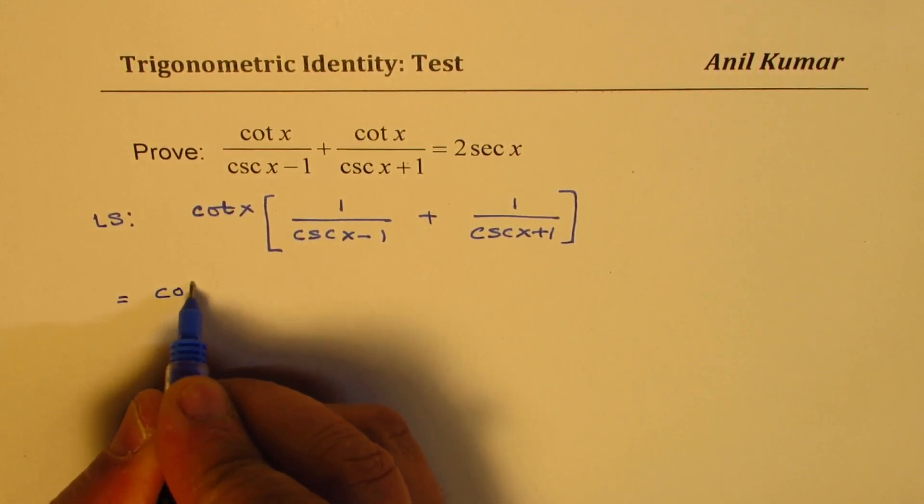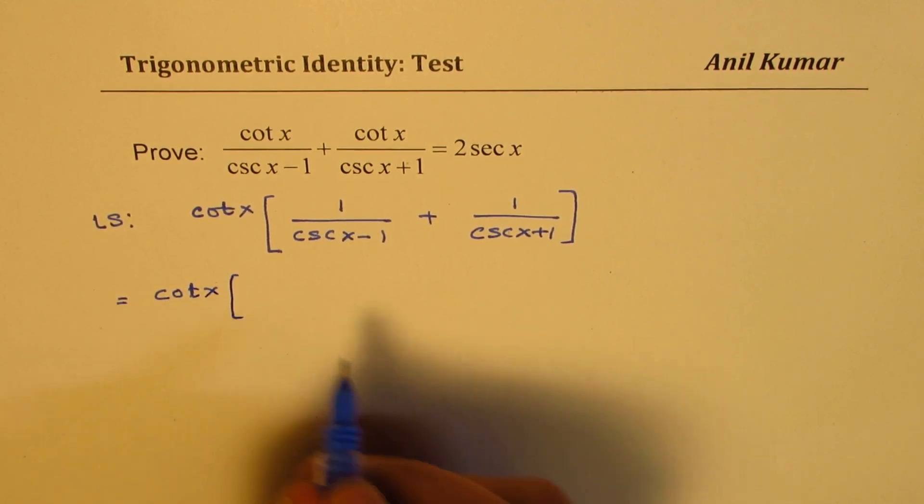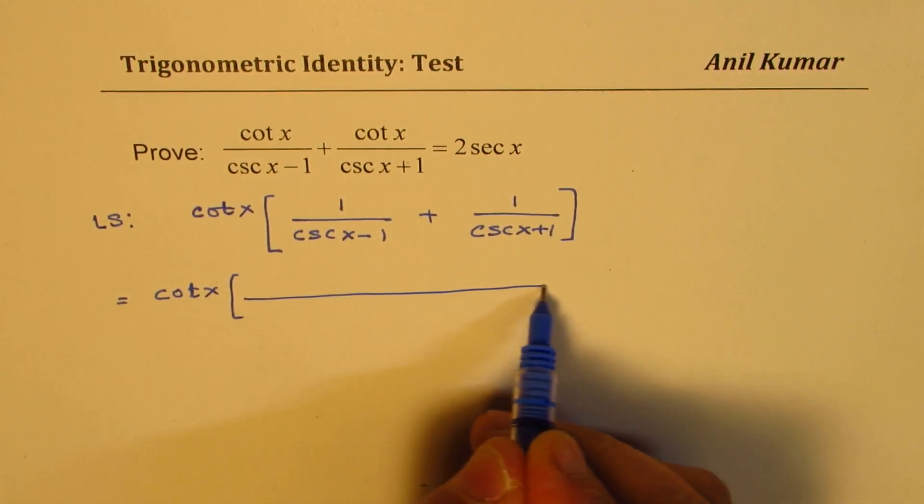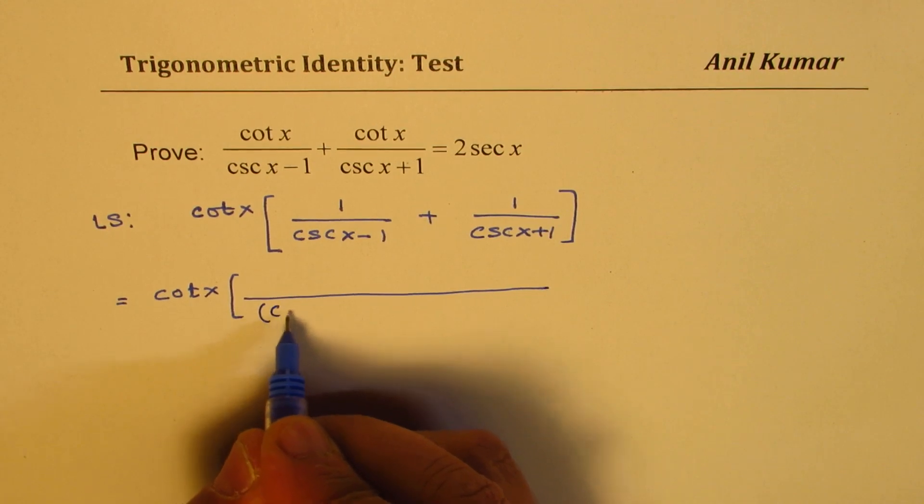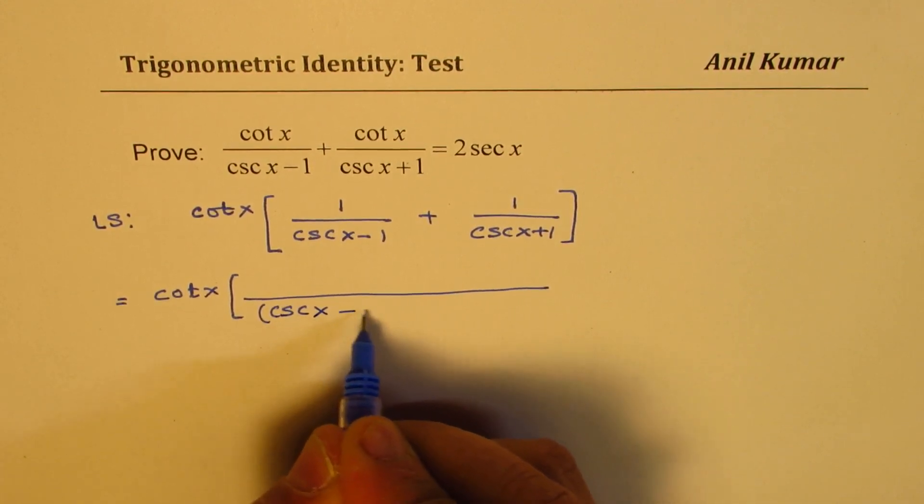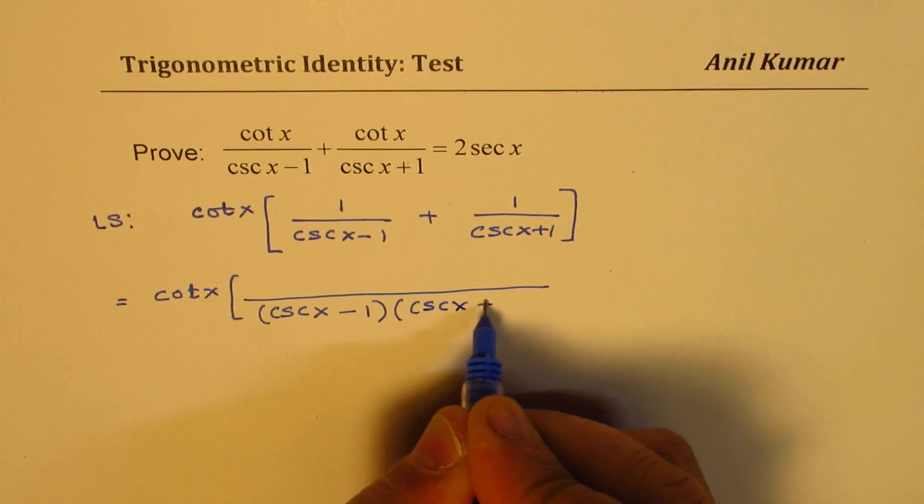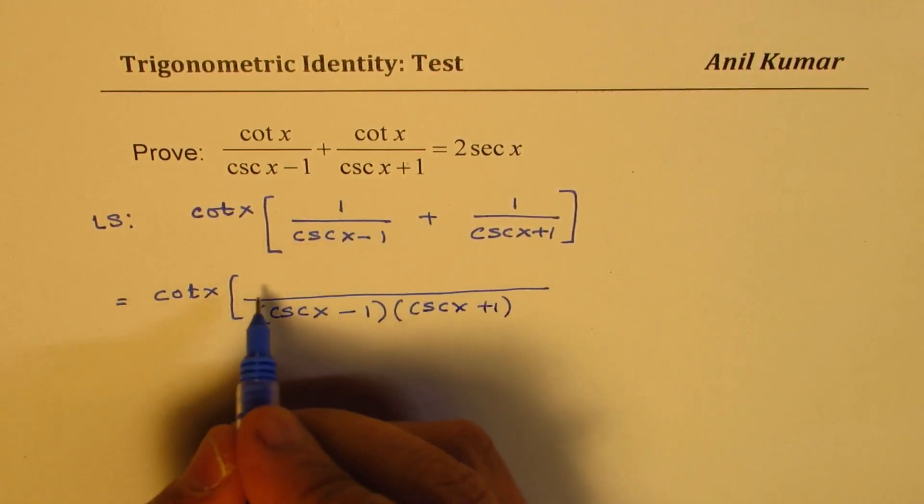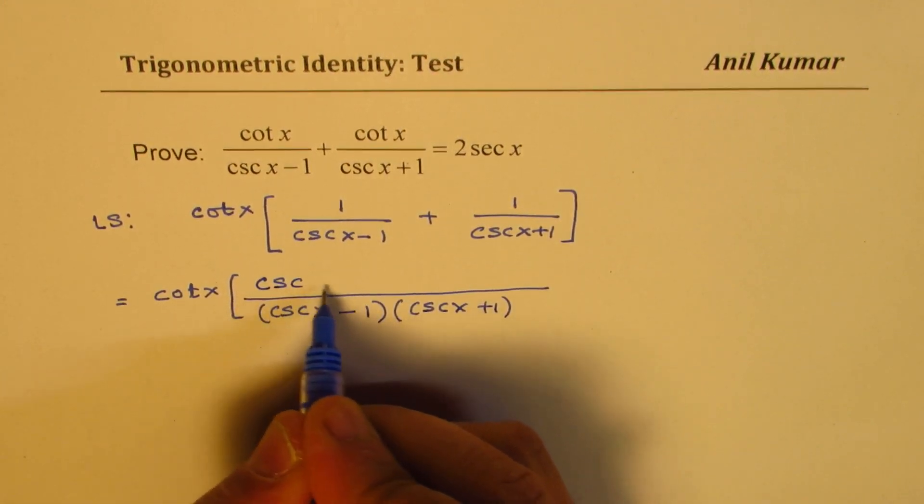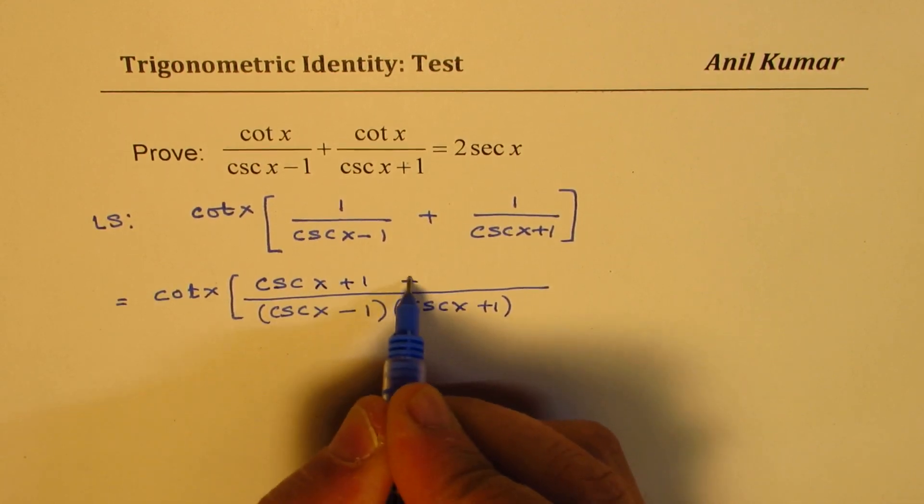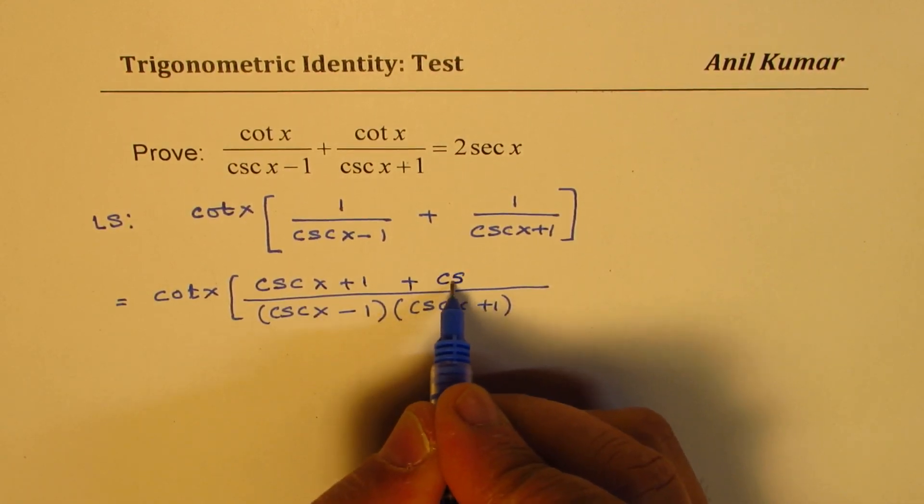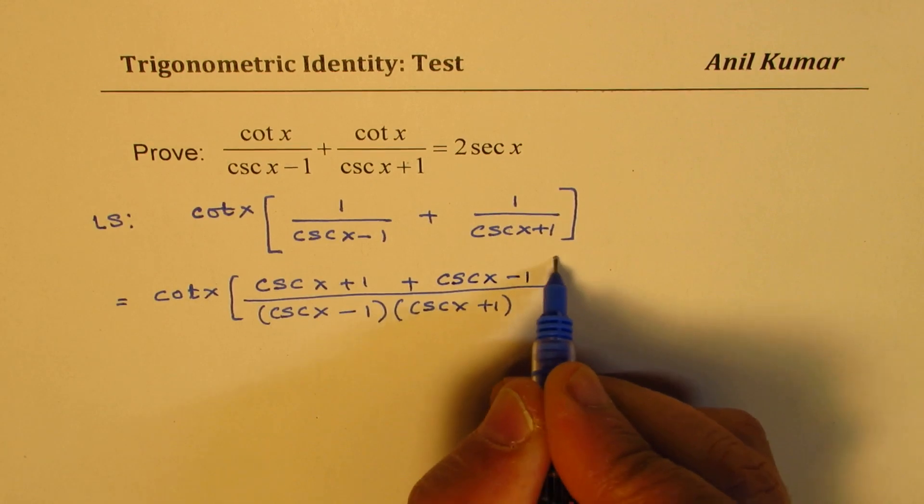So what do we get? So we get cot x, and here we have common denominator, which is cosecant x minus 1 times cosecant x plus 1, cross multiply. So we get cosecant x plus 1 plus cosecant x minus 1.